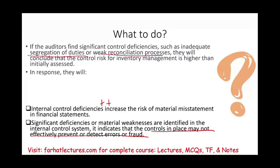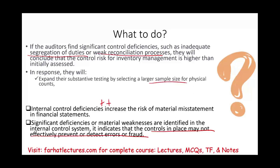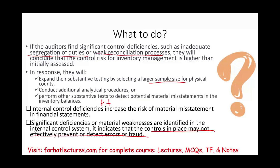If the auditor finds significant control deficiencies — such as poor segregation of duties or a weak reconciliation process — they'll conclude that the control risk for inventory is higher than initially thought. In response, we expand our substantive testing by selecting a larger sample, doing more analytical procedures, or performing substantive tests of detail to find any potential material misstatement in the inventory balance.